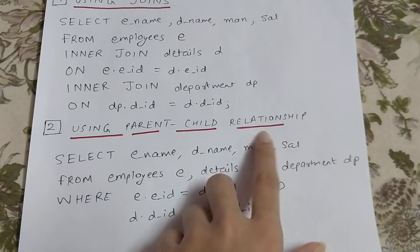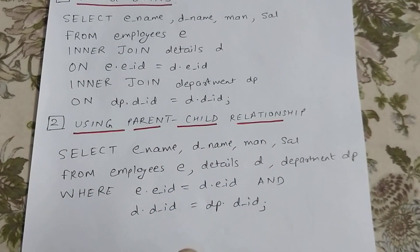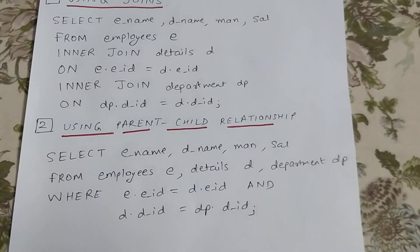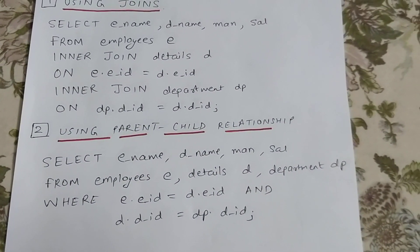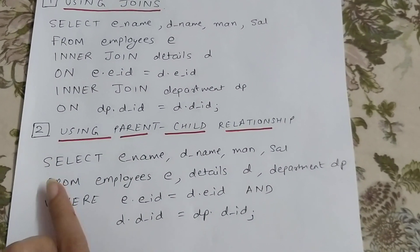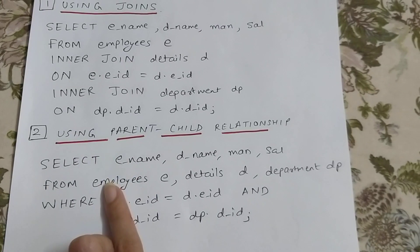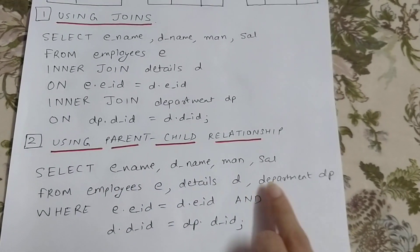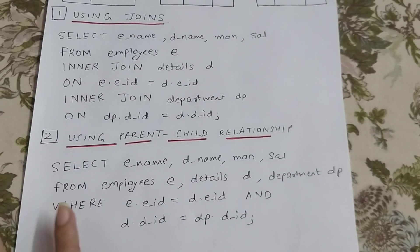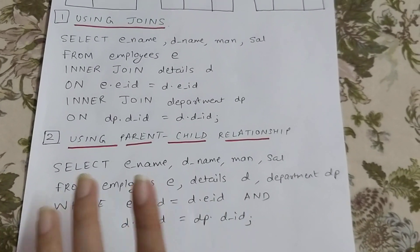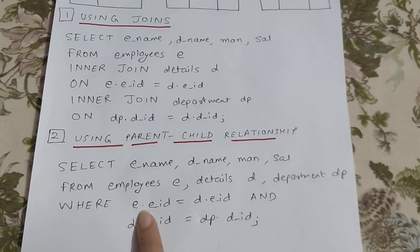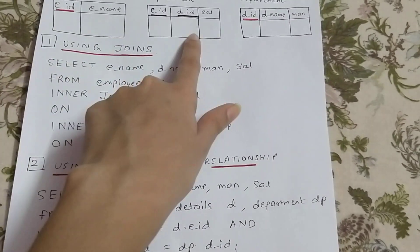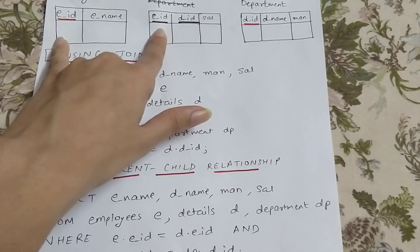The second way is by using the parent-child relationship. This is very simple — all you have to do is SELECT whatever you want to print: E_name, D_name, manager, salary. Then FROM employees E, details D, department DP — giving aliases — and in the WHERE clause write E.EID = D.EID.